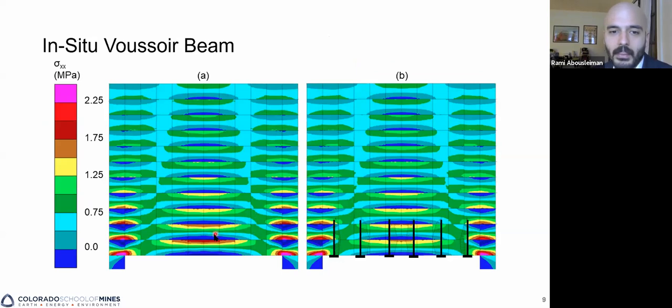Furthermore, the difference between our unsupported and supported models shows a 50% decrease in horizontal stress at the mid-span, but that stress concentrations at the abutment remain elevated even when the roof is supported.